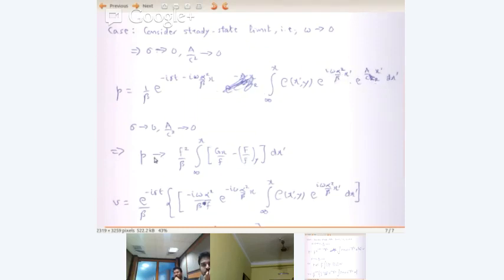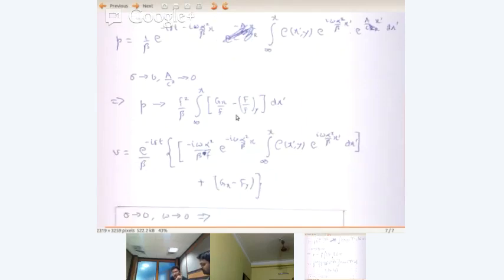So you are left with P tends to, we have an F squared coming from here. So F squared by beta integral from infinity to x. If you take that F squared out and take the curl, take the dot product, you get g x by f minus d by dy of capital F by small f, close bracket, and that's integrated with respect to x prime. So this is the pressure field. Basically you get a curl and you are integrating from the eastern boundary to wherever you are interested.